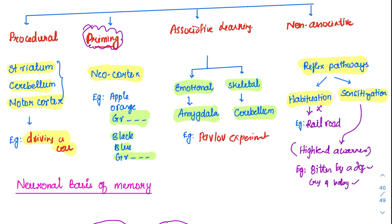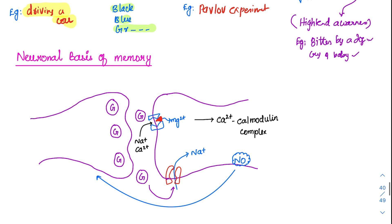Now coming to the neuronal basis. All those examples we have to remember as any of them can be asked in exams. Coming to the neuronal basis of memory — how memory is enhanced — this is called plasticity of the brain. If you constantly learn a subject or practice surgery, you become an expert. The brain does this with the help of various neurotransmitters and receptors which change based on training. Here we can see a pre-synaptic terminal.